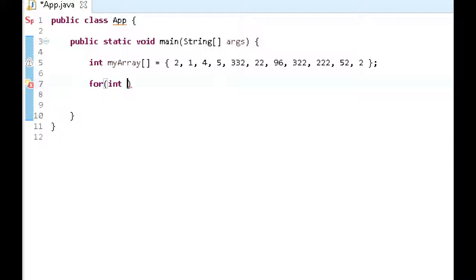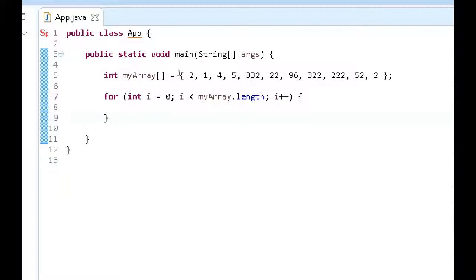For int i equals 0, i is less than myArray.length, and then i++. So we have our loop here. Now what we have in this loop is going to loop through each one of these integers within this array, and as we're looping through it, we're iterating through each one of these integers here.